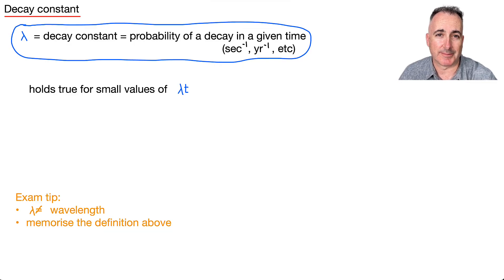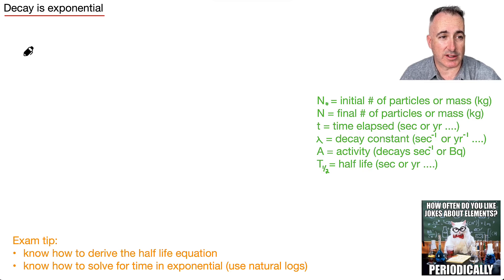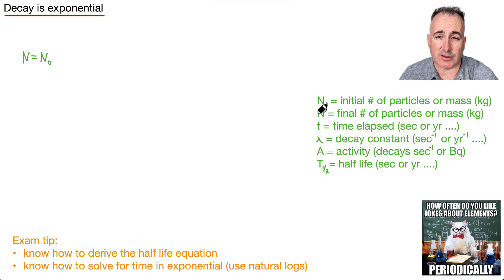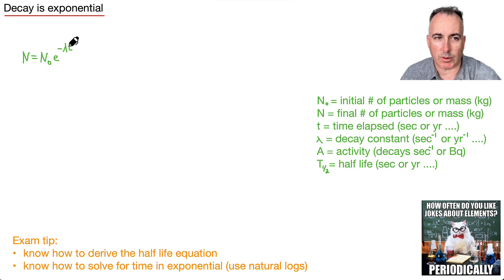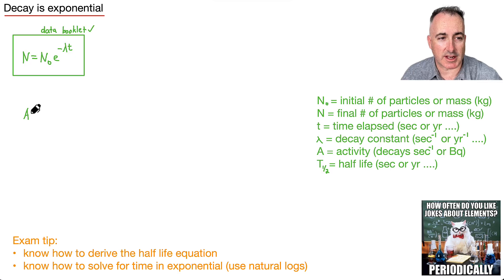Now let's dig a little deeper with these equations. The main exponential equation — the one I use most often — is N equals N₀ e to the minus lambda t. N is the final amount, mass, or number of particles, and N₀ is the initial amount. We also have a version that links to activity: activity is related to N by just multiplying lambda times N. So activity equals lambda N₀ e to the minus lambda t.